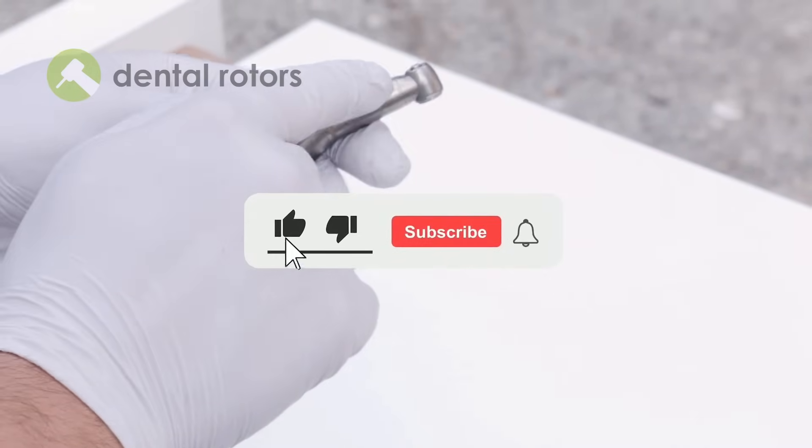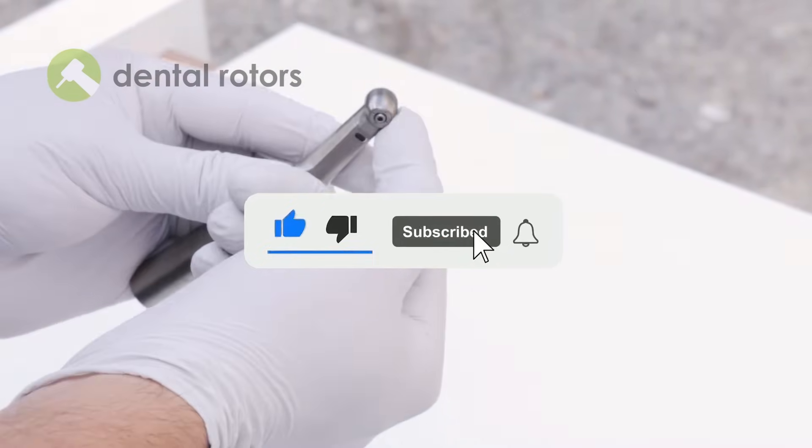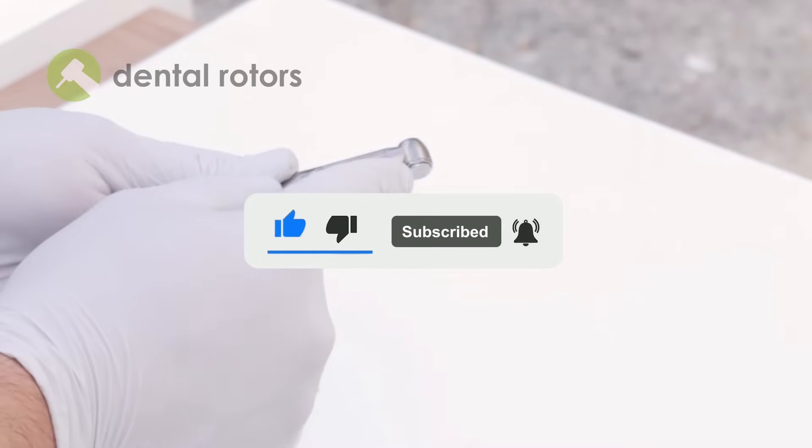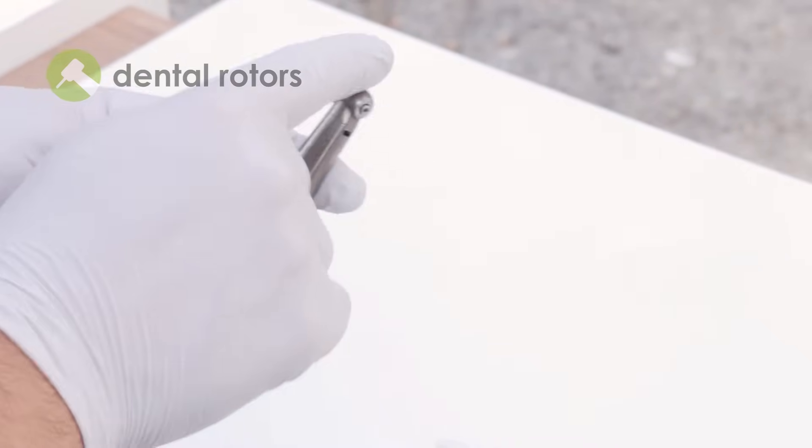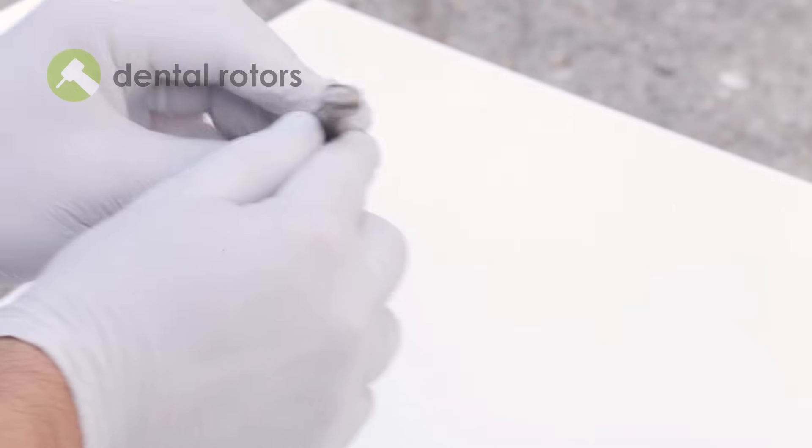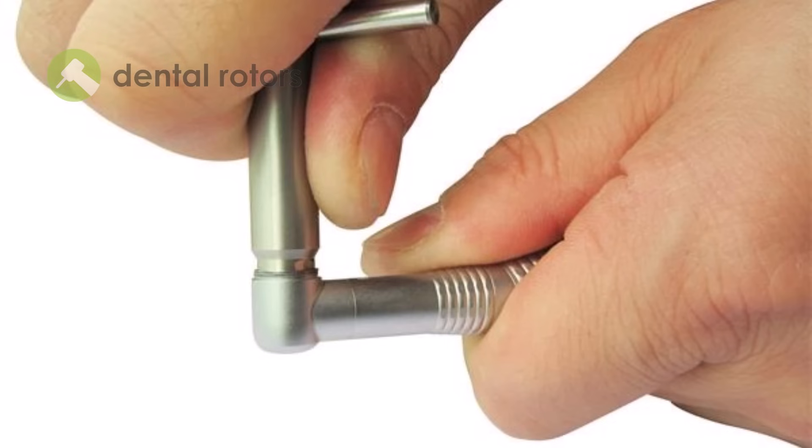First, carefully check the head of the handpiece for any dents or visible damage. If there are dents, you may have difficulty removing or installing the new cartridge. In such cases, we recommend using a special head expander available on our Dental Rotor Store.